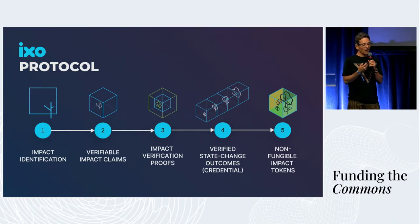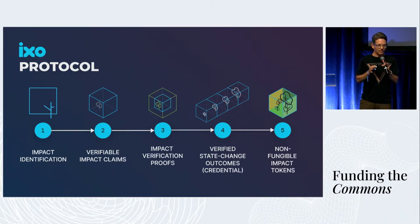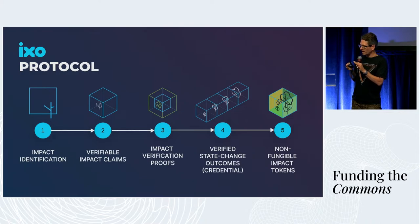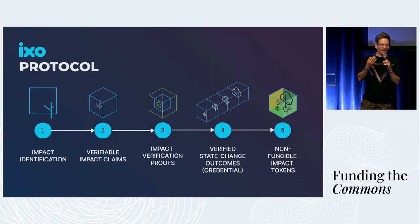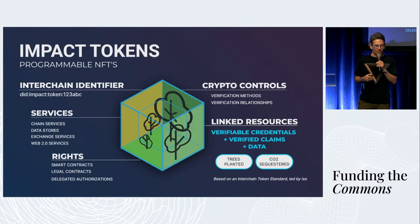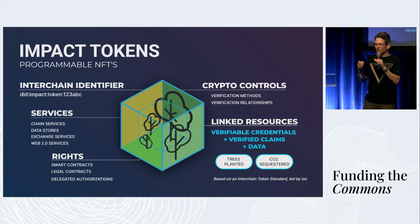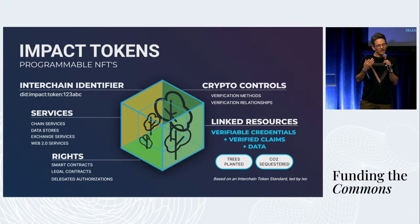We've been working since around 2015 on a protocol using decentralized identifiers, verifiable claims and credentials, to have a way of representing what's happening in the real world with identification, verifiability, creating these as verifiable claims — signed claims — and then verification with verification proofs, which leads to the ability to issue credentials. You can package those credentials together and put them into non-fungible impact tokens. Now, impact tokens are basically NFTs, but what we've worked on is a much more robust metadata standard around this, which uses decentralized identifiers and the DID documents — for those of you familiar with the W3C specification. This has an identifier, and it has the crypto controls and so on of a DID document, but we've added in some additional properties here.